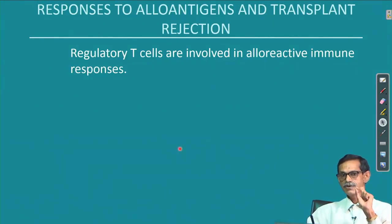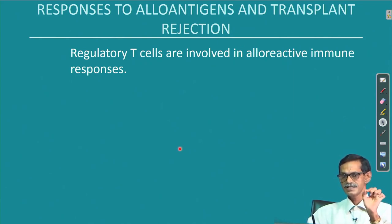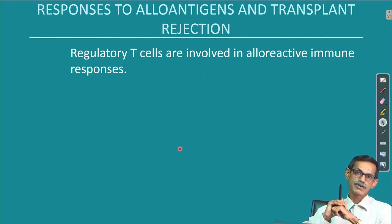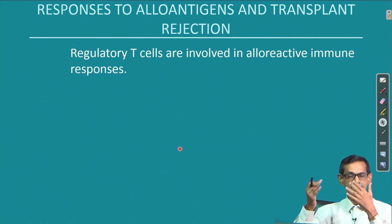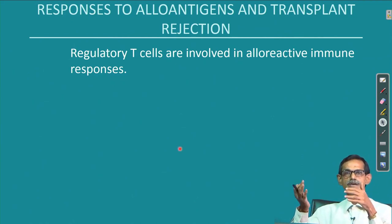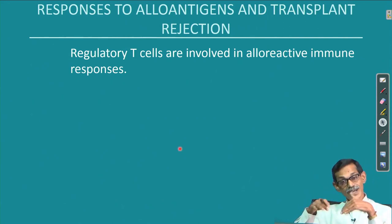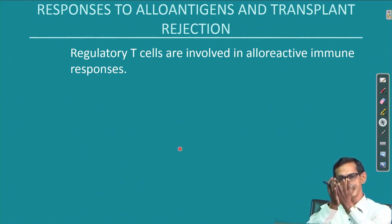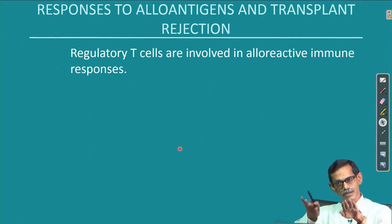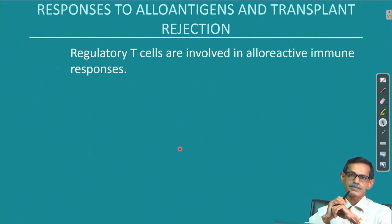Regulatory T cells, which suppress active T cells, are also very important here. If regulatory T cells are present in sufficient numbers, they can repress the alloreactive immune response. Another treatment approach is to give cytokines along with the transplant that activate regulatory T cells, thereby suppressing the transplant reaction.